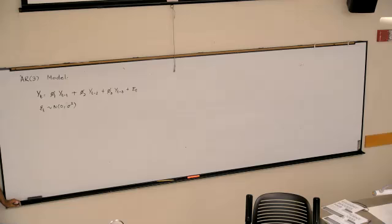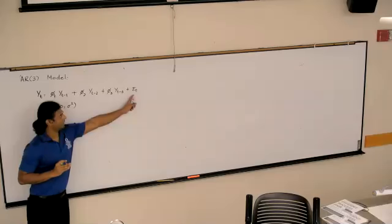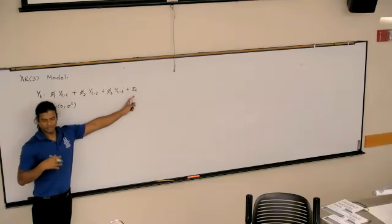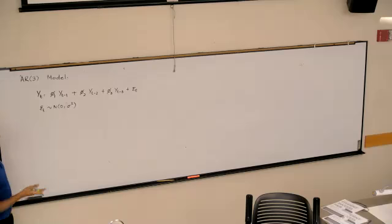So if we take the expectation of each of those, we will have constant mean. The series is likely to be more or it is stationary. Once we verify that, what is the next step? What did we find next?